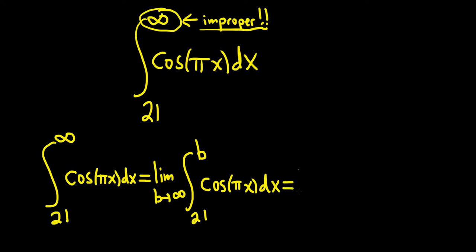This equals the limit as b approaches infinity. When integrating cosine, ask yourself: what function has cosine as its derivative? Sine. So the integral of cosine is sine. Here we have cosine pi x, so we divide by pi. This gives us sine pi x over pi, from 21 to b. This is a shortcut way of integrating this particular form.